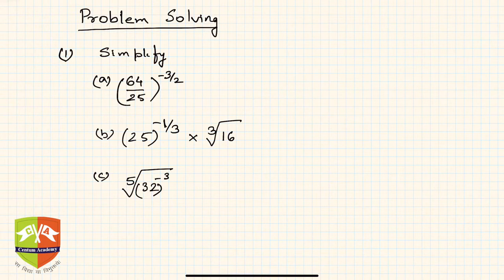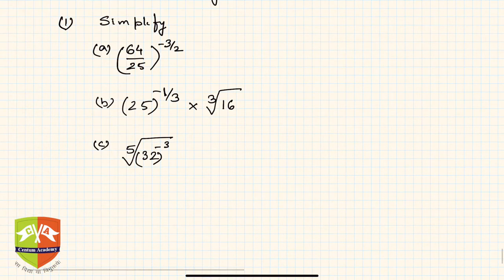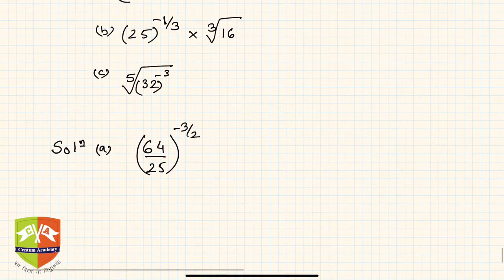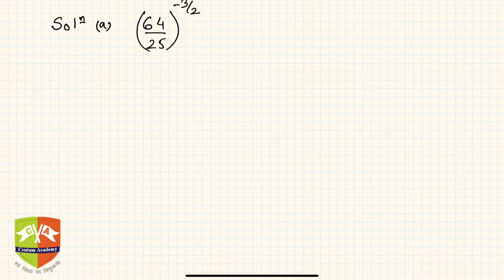The first question says: simplify (64/25) to the power minus 3 by 2. So let us write the solution. We are trying to simplify 64 by 25 whole to the power minus 3 by 2. By the laws of exponents, we know this can be rewritten.